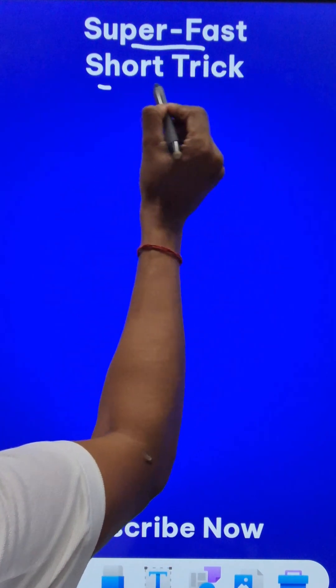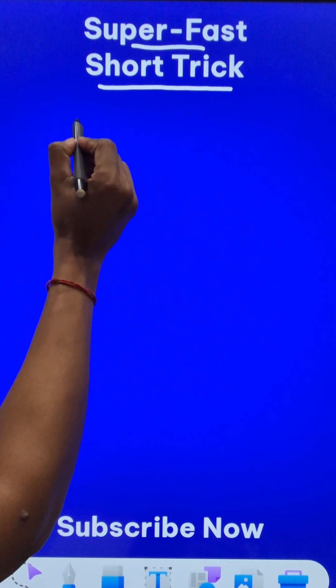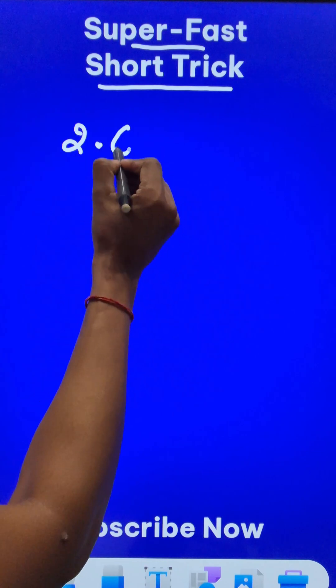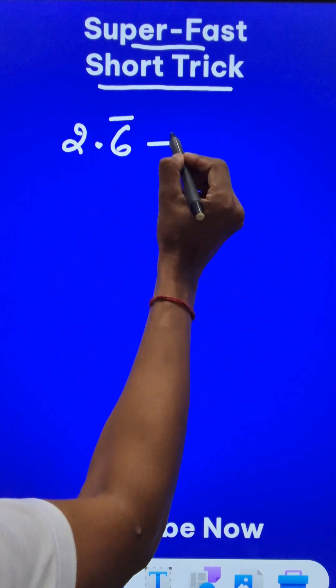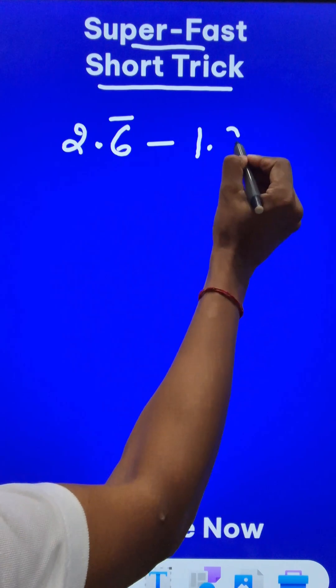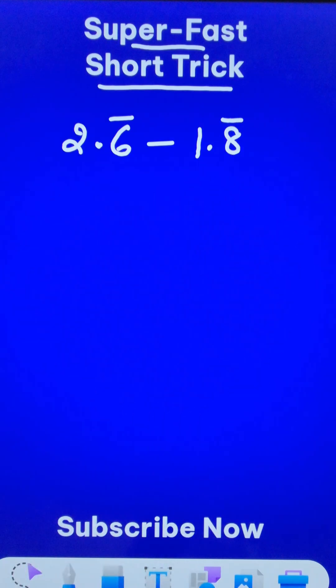Here is a super fast short trick. Suppose there is a non-terminating decimal like 2.6 bar. So bar means the 6 carries on and on. And we have to subtract another non-terminating decimal 1.8 bar from that. Now how do you solve this?